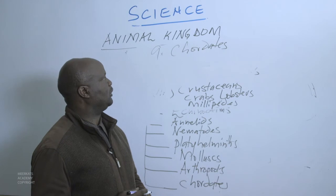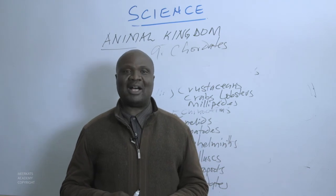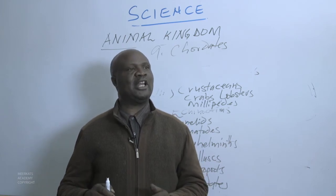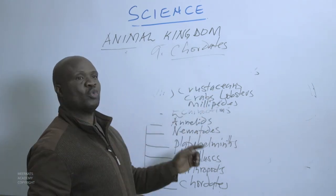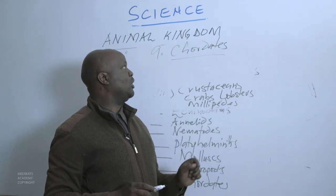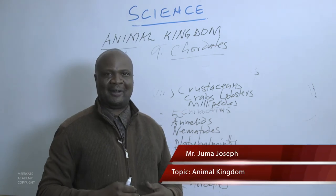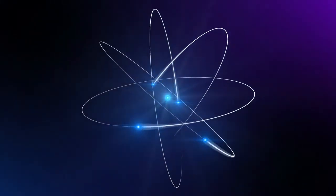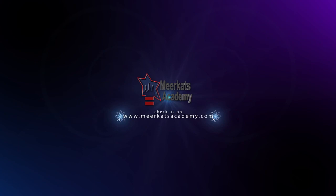Because the Chordates phylum has its own groupings with a lot of information, we shall end today's lesson here and continue with the Chordates in the next lesson. The Chordates is where we have human beings, elephants, and dogs. We shall continue in our next lesson to see the different groupings within the Chordates. Thank you very much.